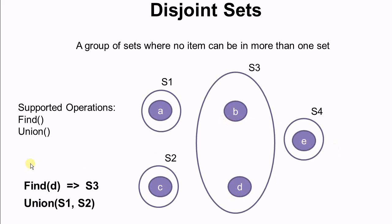As an example, here we have four disjoint sets: S1, S2, S3, and S4. S3 contains two items, while S1, S2, and S4 each contain only one item.